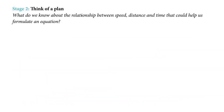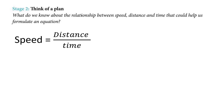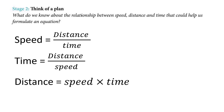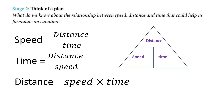So after we have understood the problem and know what we are supposed to find, stage number two is to think of a plan. What do we know about the relationship between speed, distance and time that could help us to form an equation? We know that speed is equal to distance over time. Time can be found by taking distance over speed, and distance can be found by taking speed times time. Recalling this triangle: to find distance, take speed times time; to find speed, take distance over time; and to find time, take distance divided by speed.